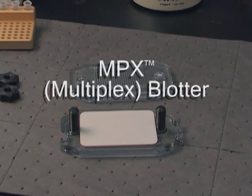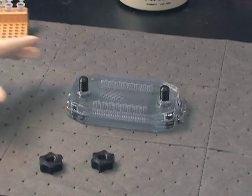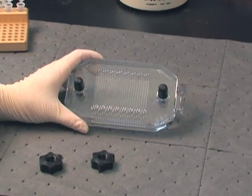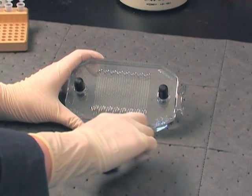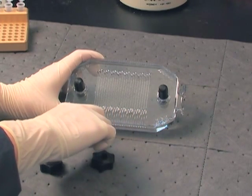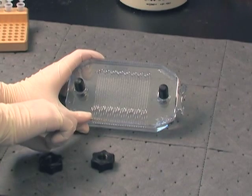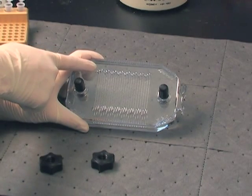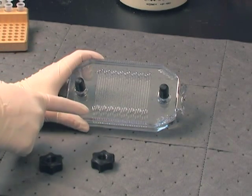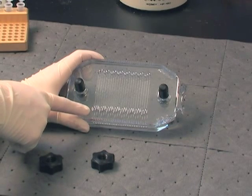The MPX is designed with two types of ports. One is beveled, the other rounded. The ports are compatible with both single and multi-channel pipettes. Orient the MPX so the beveled ports run along the bottom and are closest to you. The round ports at the top will provide a capillary-like flow when filling the channel with the pipette from the bottom beveled ports.